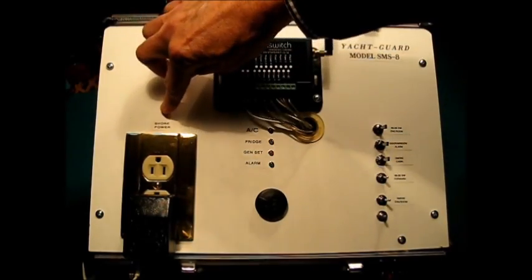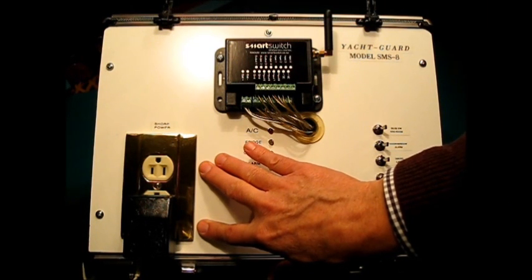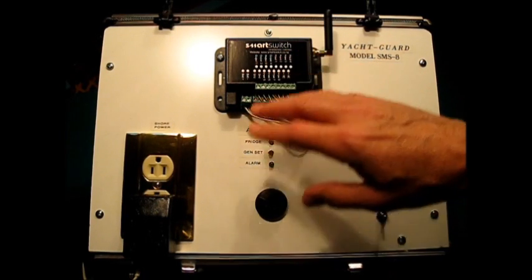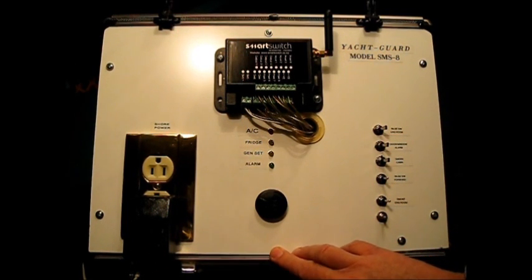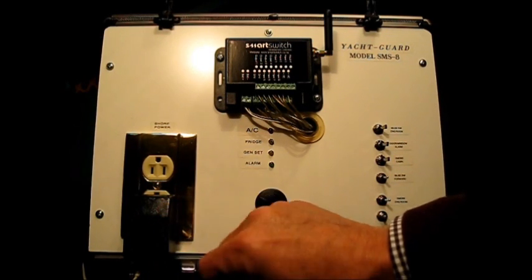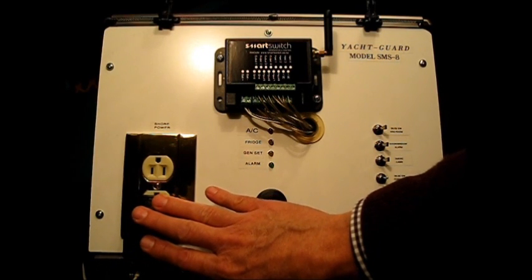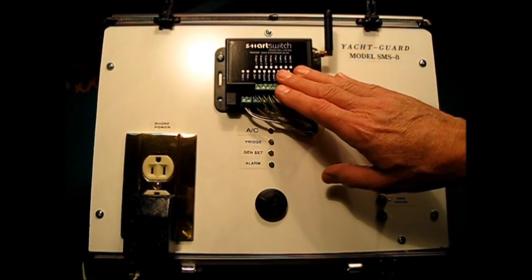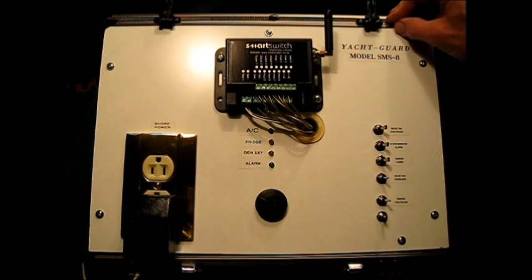As far as shore power monitoring, the simplest way to do that is to select an outlet near the SMS-8 unit. Plug in a transformer which would be from Radio Shack or Tandy or one of those companies, which is typically used for charging cell phones and the like. Plug it into the outlet, wire its output back to the SMS-8 and you've got a very convenient and quick way to monitor shore power.